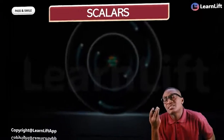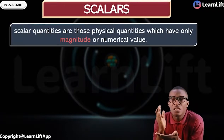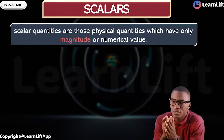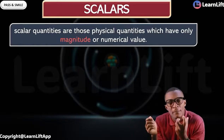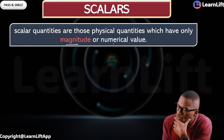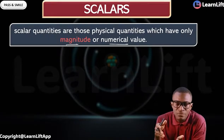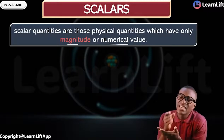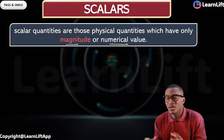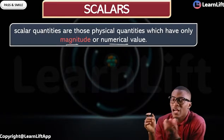Let's introduce the concept of scalar. A physical quantity which has only magnitude or numerical value is said to be called a scalar quantity. Any physical quantity which has only magnitude or numerical value — whether it be mass, speed, or length — we can attach a number to it. So what's a scalar? These are physical quantities that have only numerical value or magnitude.